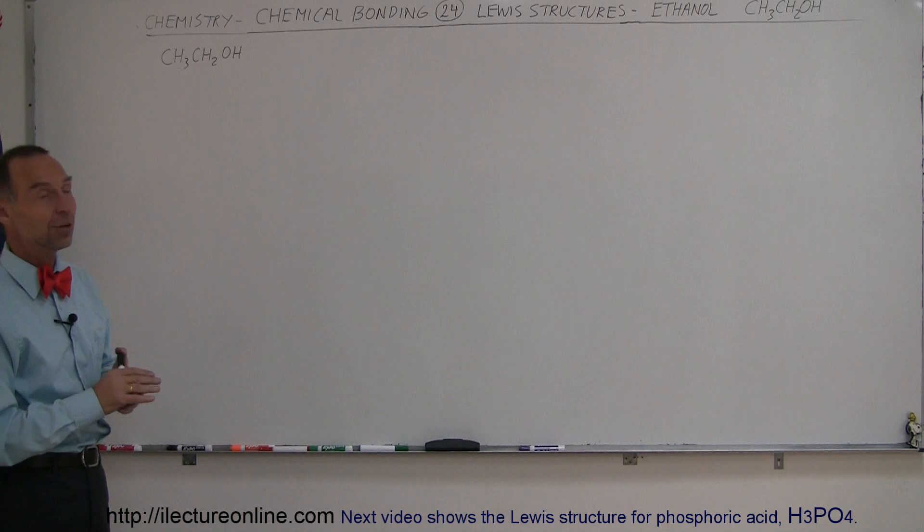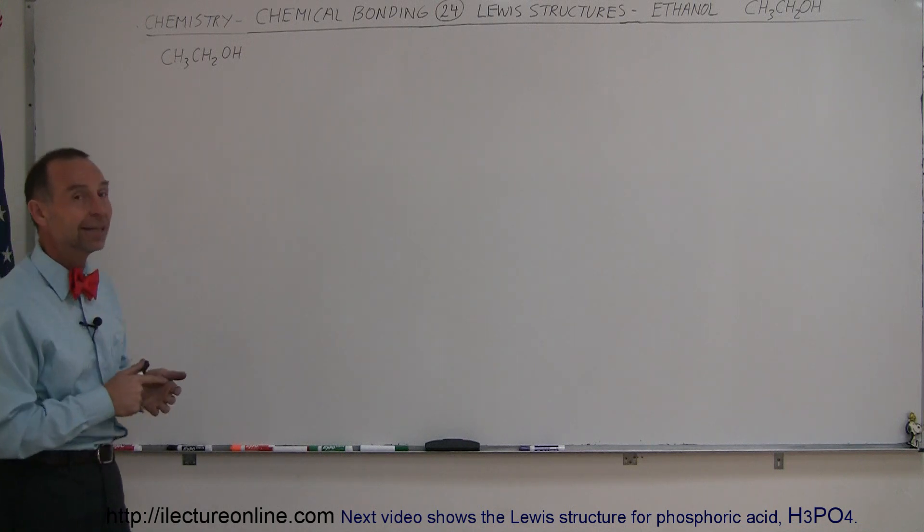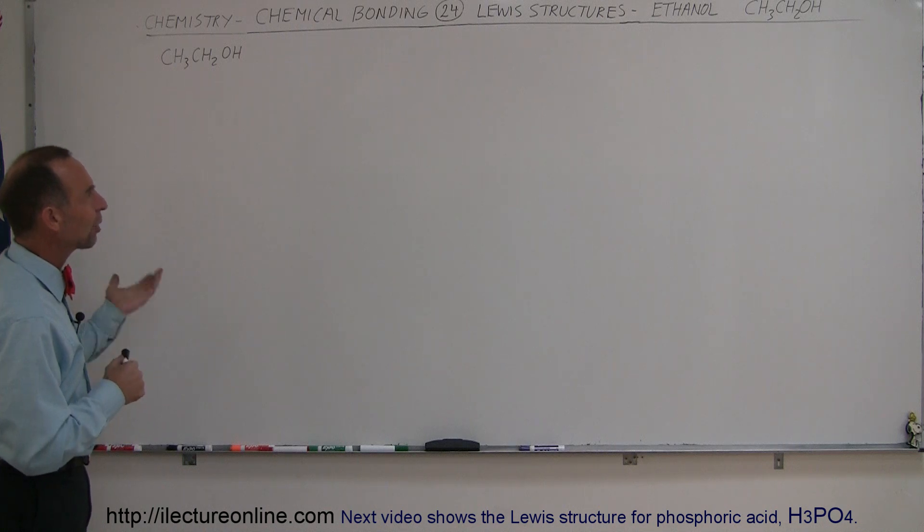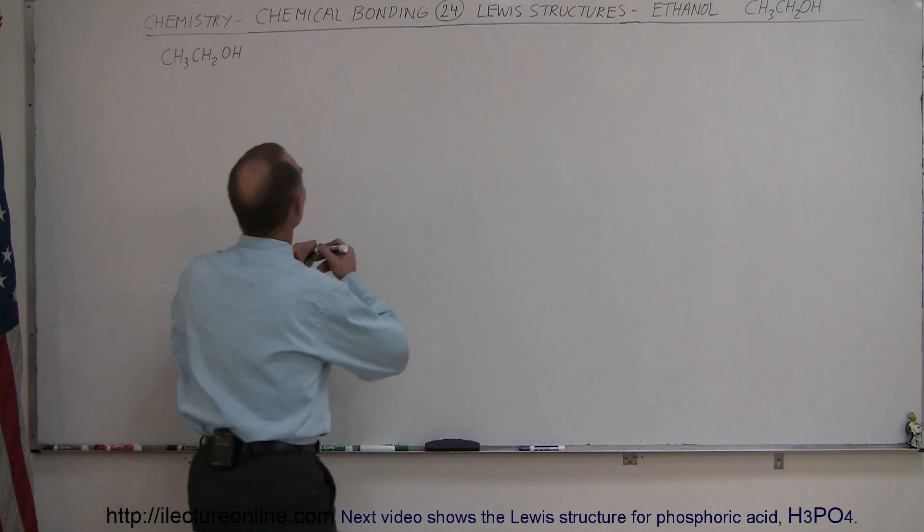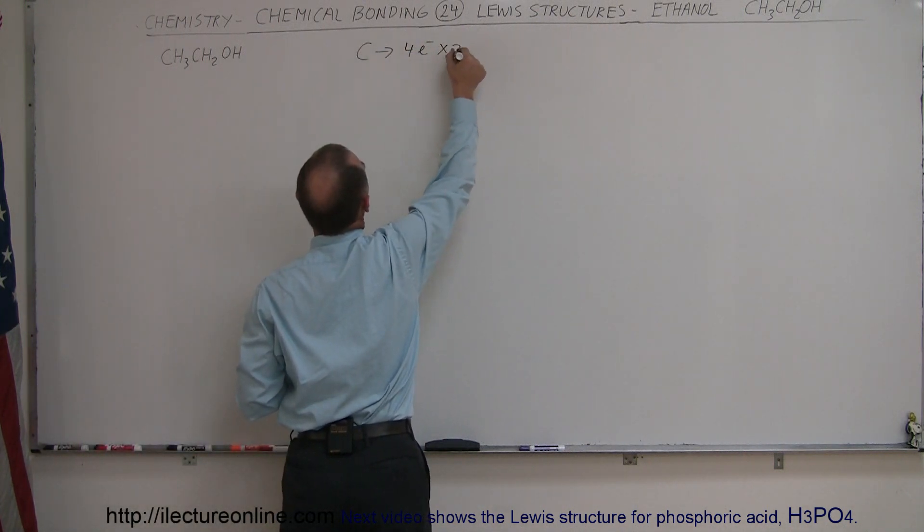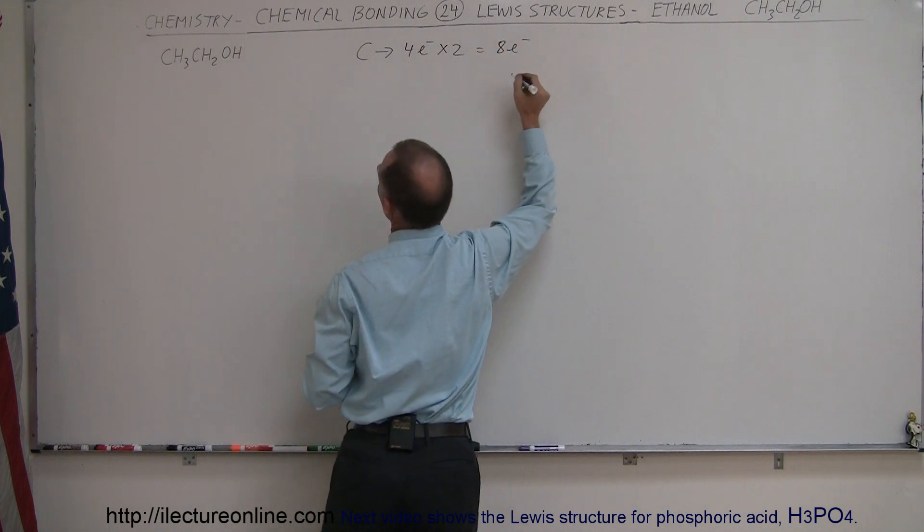So if you're going to drink alcohol, make sure it's the ethanol variety, not the methanol variety. Now, how do we draw the Lewis structure? Let's begin by saying we have two carbons, and each carbon has four valence electrons times two, which equals eight valence electrons.